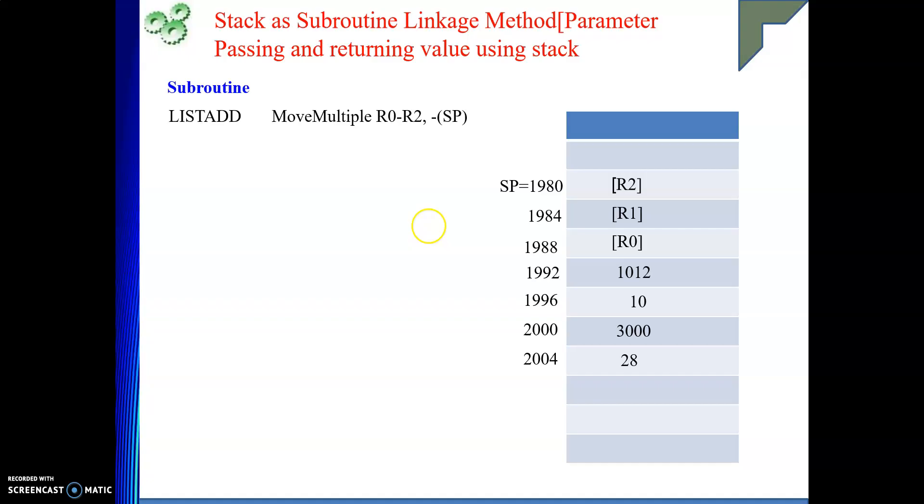After that, you extract your parameters. Your parameters are 3000 and your 10. These two are my parameters. So, those I need to extract into my variables or into my registers, whatever I am using. Then, we can proceed with that calculations part. So, move 16 SP, R1.